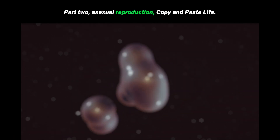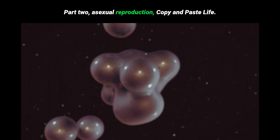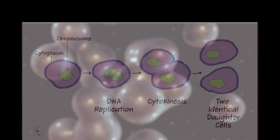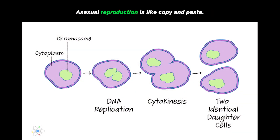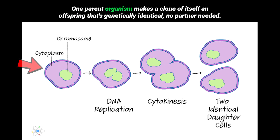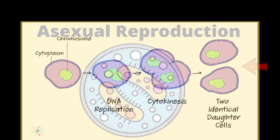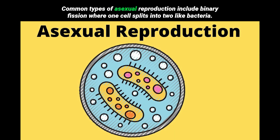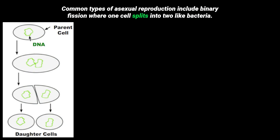Part 2: Asexual reproduction — copy and paste life. Asexual reproduction is like copy and paste. One parent organism makes a clone of itself, an offspring that's genetically identical. No partner needed. Common types include binary fission, where one cell splits into two, like bacteria.